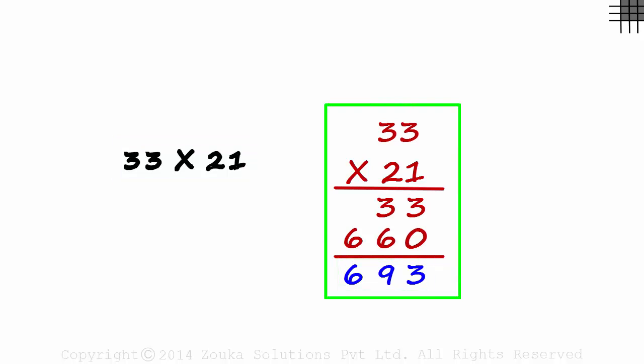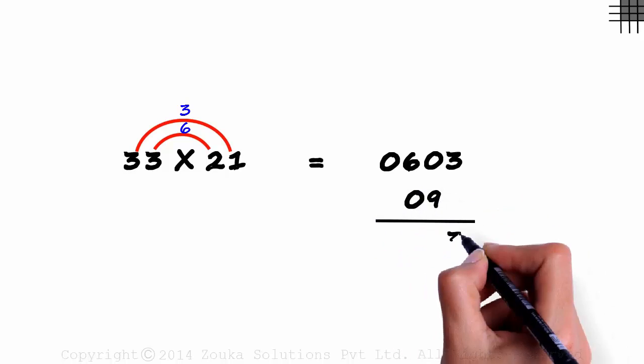But this took a lot of time. Want to see a better way? Okay, here goes. 3 times 2 is 06, 3 times 1 is 03, and we add this product with this one. 6 plus 3 is 09. 693.